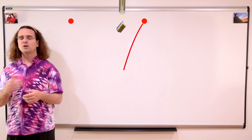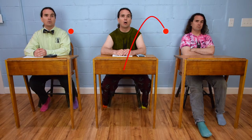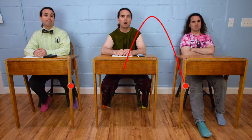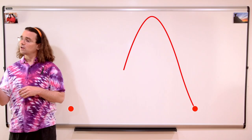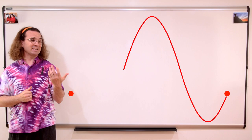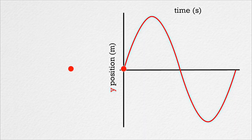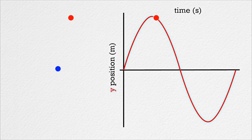If we set the dot in motion at a constant velocity to the right, Bo, what sort of function does that create? That looks just like a sine curve. Correct, Bo. The y position of a dot moving in simple harmonic motion like this creates a sine curve.